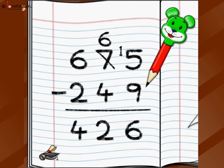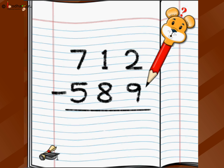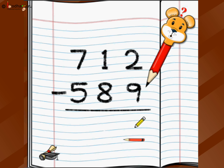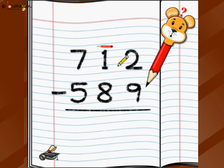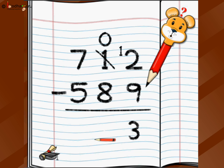Let's take a further complicated problem — but the steps stay exactly the same; that's the beauty of maths. We want to do 712 minus 589. Write 712 minus 589 with an underline. Going right to left: 2 minus 9 — can't do it, so 2 borrows from its neighbor 1. The 1 reduces to 0 and gives 10 to the 2, making it 12. Now 12 minus 9 is 3.